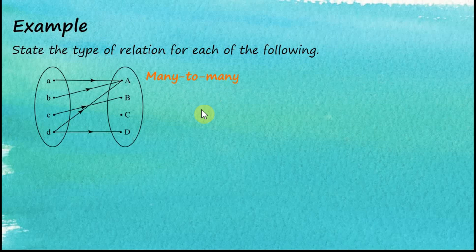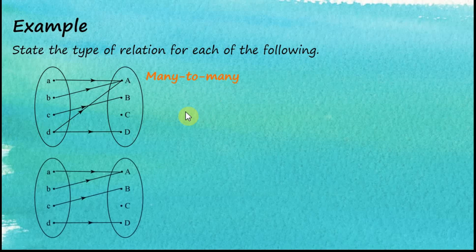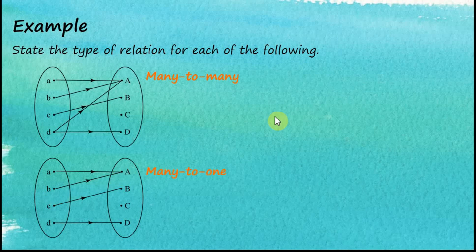Let's see the second one. We have two objects mapped to one image. So this is a many-to-one relation.